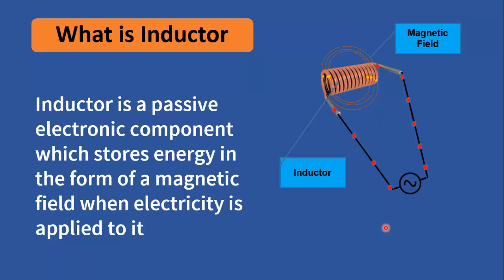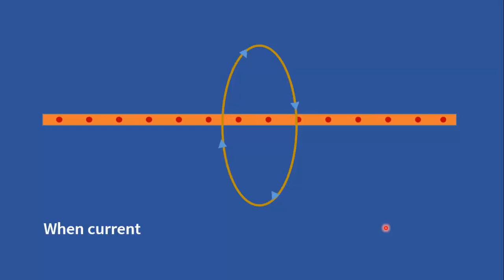How it is different from a straight conductor, let's try to understand from this figure. According to Ampere's law, when current flows through a conductor, it generates a magnetic field around it.